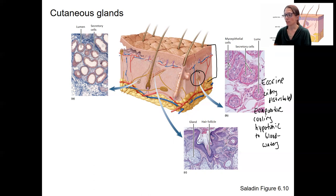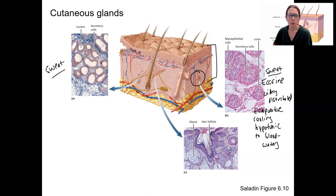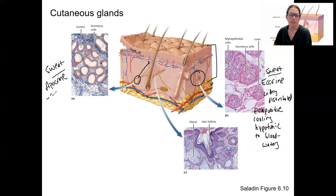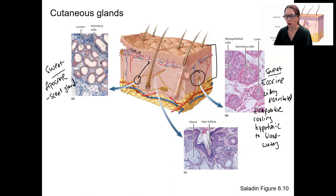Then we have the other type of sweat gland — this is another type of sweat gland — but this is the one that releases onto a hair follicle. These are called apocrine glands, and they are thought to function as scent glands. They produce a more oily, viscous secretion, and they're located more in the pubic, axillary, and facial hair regions. They open onto ducts right onto the hair follicles.